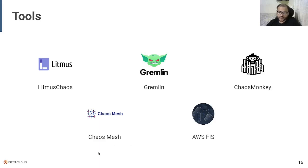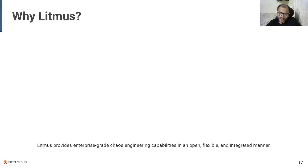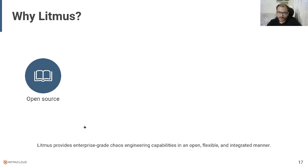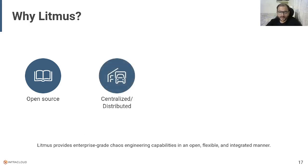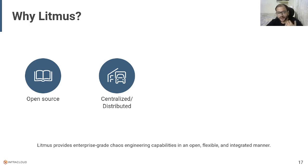For this talk, and personally why I feel Litmus Chaos is great: first, it is open source so anybody can use it. It can be used in a centralized or distributed way. One use case I found very helpful was if there are multiple accounts in your organization and you need to execute chaos from a centralized way — let's say one central control with multiple spoke accounts — you can do that easily with Litmus Chaos. It has agents which you can deploy in different environments and execute chaos over there.